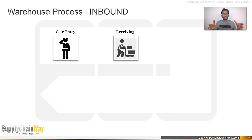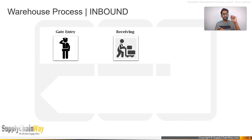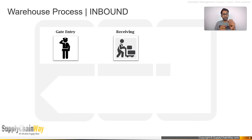Once gate entry is completed, receiving begins. The vehicle goes to the dock and gets docked. Documents are handed over to the inbound team, who do a quick documentation check. The inbound supervisor then gives the go-ahead for unloading. While unloading, a handling unit count is performed — for example, if the outer packing is a pallet, then each pallet is one handling unit.